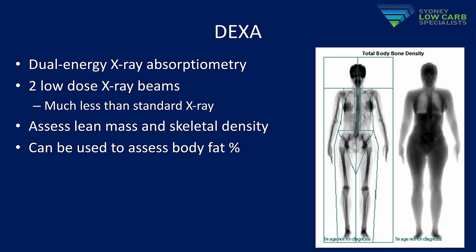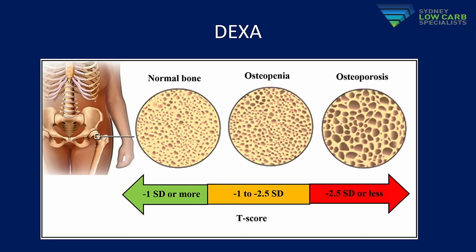In clinical practice, the most common way to measure bone density is a DEXA scan — dual energy X-ray absorptiometry — which uses two low-dose X-ray beams passed over the body. With this we can assess someone's lean mass, skeletal density, and body fat percentage very accurately. Bone density can be expressed in grams per centimeter squared or as a T-score, which compares your bone density to that of an average young healthy person.